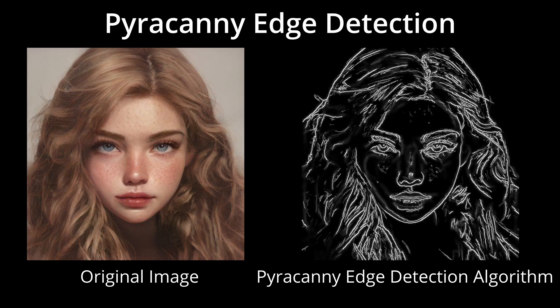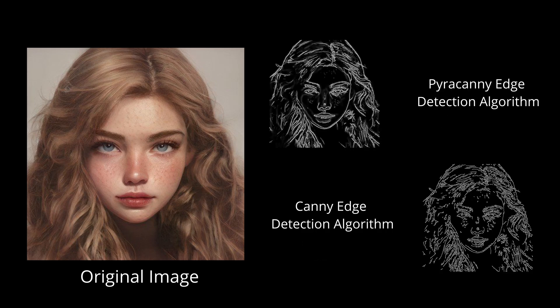Pyr-Canny is an enhancement of the Canny algorithm that applies edge detection across multiple levels of image pyramids. The pyramid approach allows it to detect edges at multiple scales, capturing both fine and coarse details. This method yields more comprehensive edge maps, especially in complex images with varied detail levels. While Canny is effective for general edge detection, Pyr-Canny provides enhanced detail and adaptability by combining information from multiple scales.